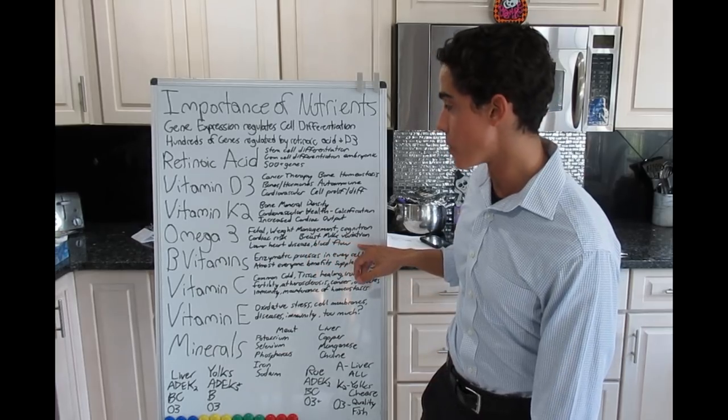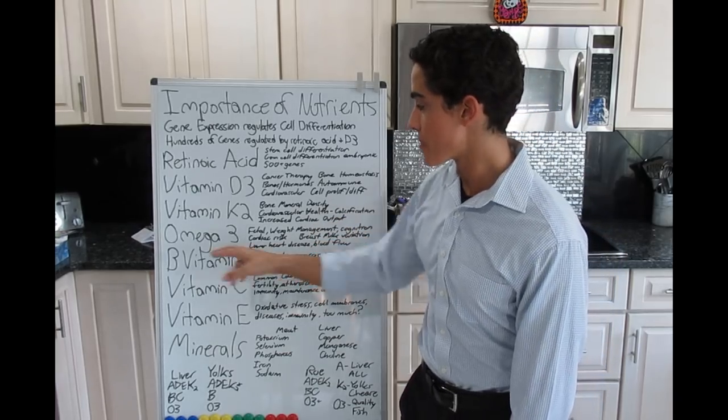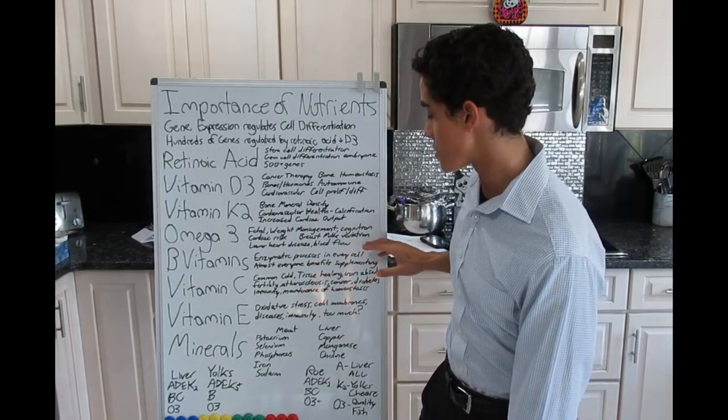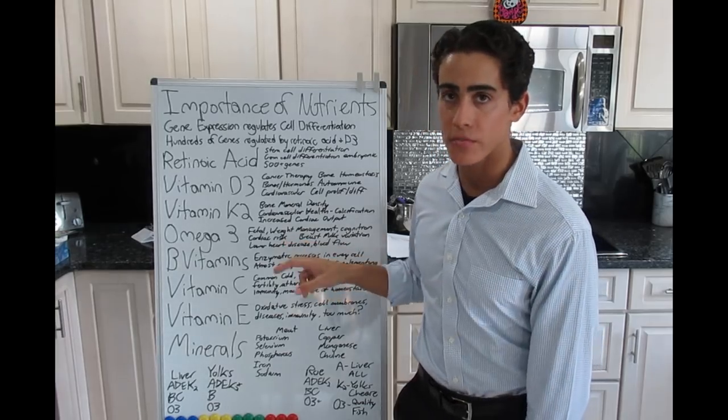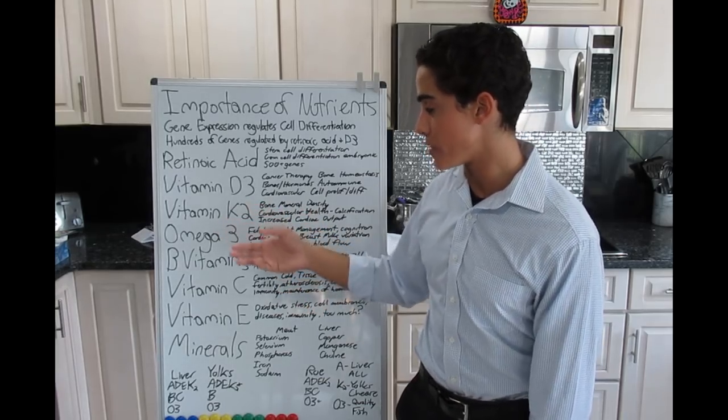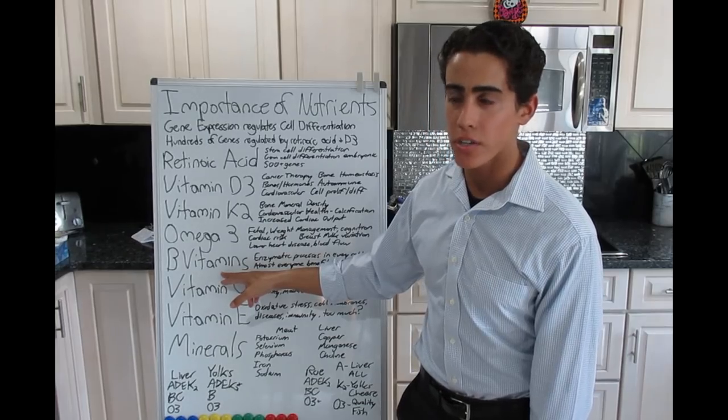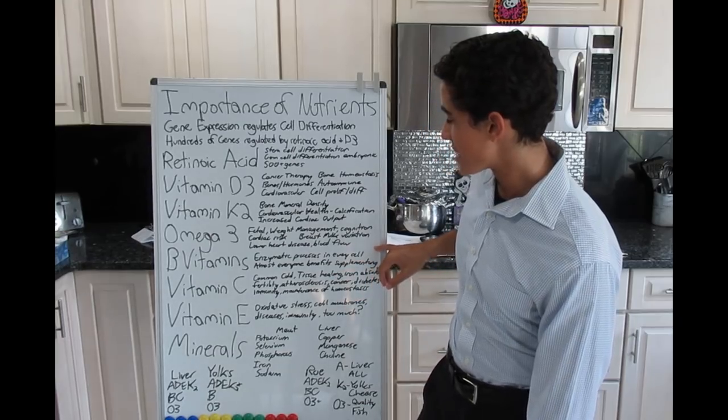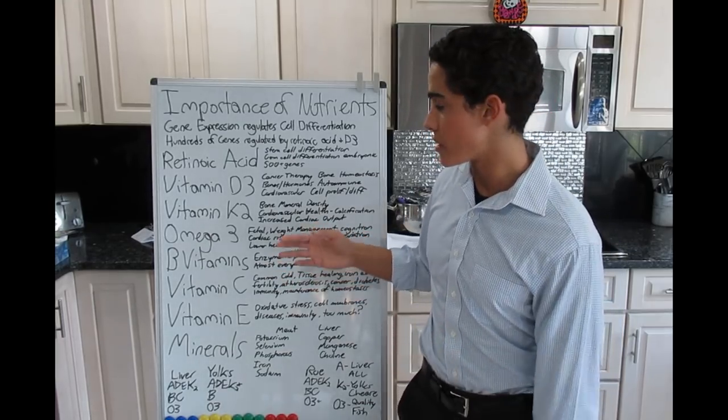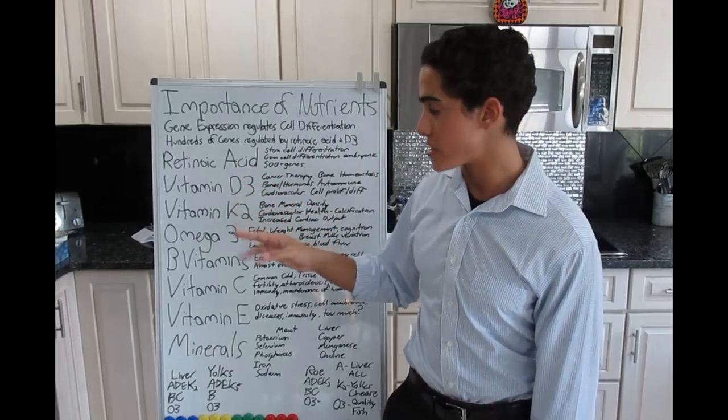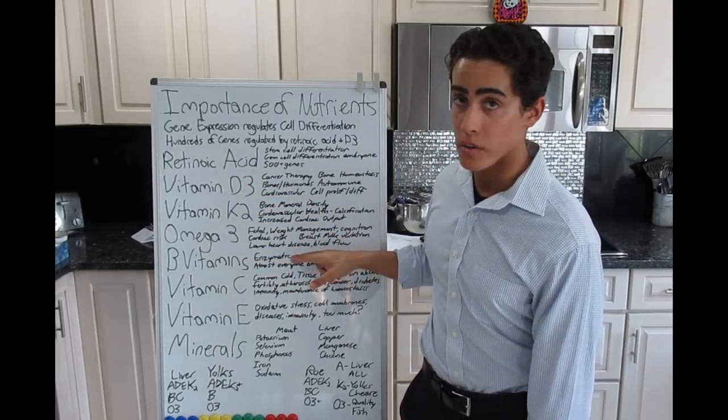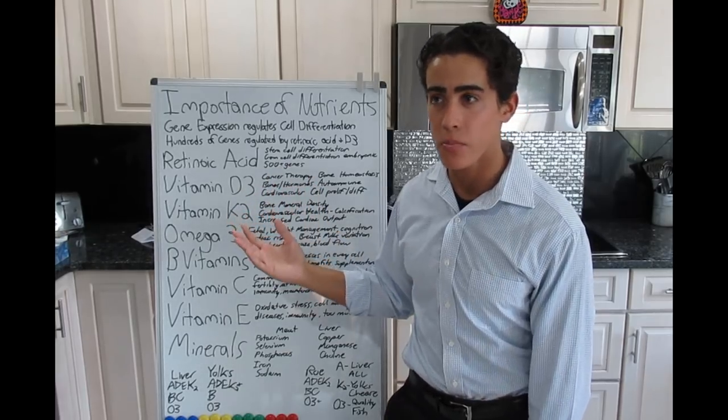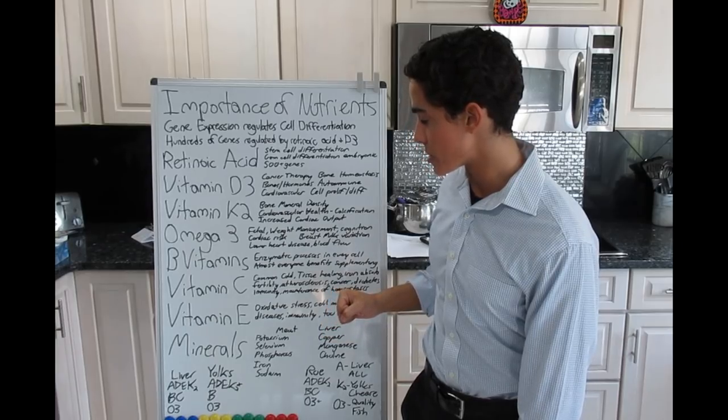B vitamins are literally involved in every single enzymatic process for cells in the body. Almost everyone benefits from supplementing vitamin B12, and all the B vitamins. And that says something about the lack of animal foods in our diet in general that we could also attribute to a lot of these other things. It's kind of an argument against veganism, so to speak. I mean, there's plenty of arguments against it, but B vitamin deficiency, one of the most important vitamins in the human body in general that most people are deficient in, even on a standard American diet. Definitely something to be said about that in regards to plant-based diets.